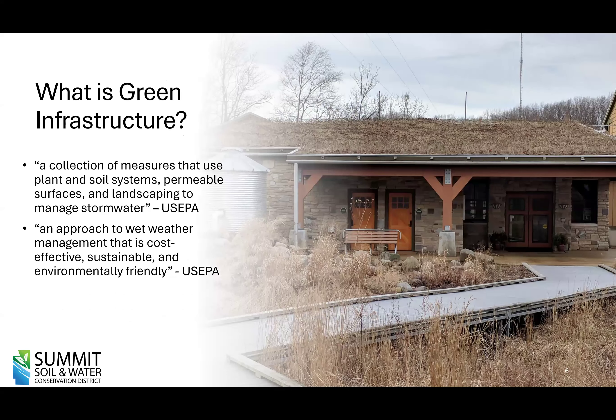So what is green infrastructure? When I Googled this, the US EPA had two definitions available. It's a collection of measures that use plants, soil systems, permeable surfaces, and landscapes to manage stormwater — an approach to wet weather management that is cost-effective, sustainable, and environmentally friendly. The basic concepts of both definitions are the same: using plant-based and soil systems or other practices that allow infiltration to manage water quality. What we've found is that short-term, green infrastructure is not very cost-effective, but long-term, compared to typical basins or underground systems, it is very cost-effective.